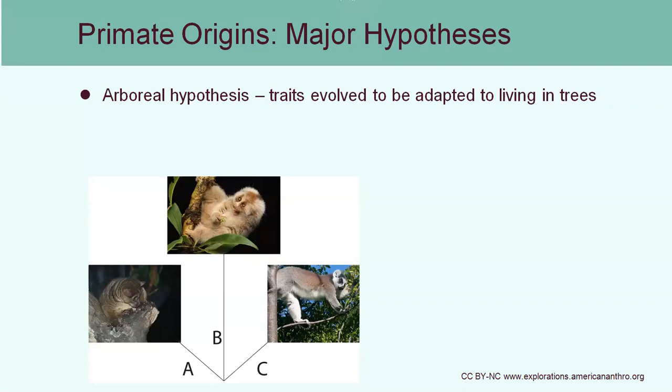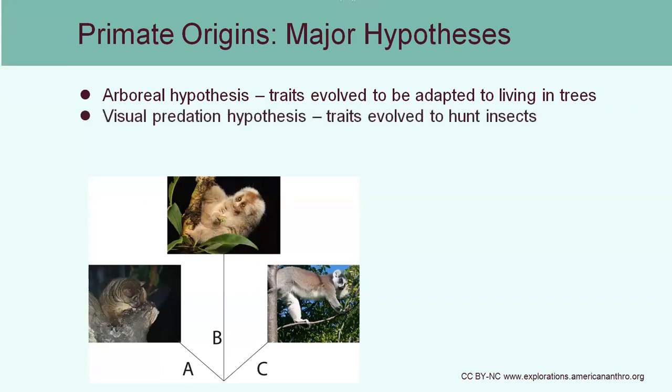The next hypothesis is a little bit more specific — it's the visual predation hypothesis. In this hypothesis, the reason we have traits such as 3D vision and color vision is because we evolved to hunt insects. So this is just an alternative way of explaining why those traits are present in primates.